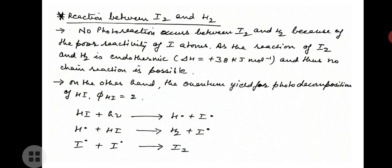Now let us study one more example: the reaction between I₂ and H₂. No photo reaction occurs between I₂ and H₂ because of the poor reactivity of iodine atoms, as the reaction is endothermic and thus no chain reaction is possible. On the other hand, the quantum yield for photo decomposition of HI — phi(HI) — is equal to 2.